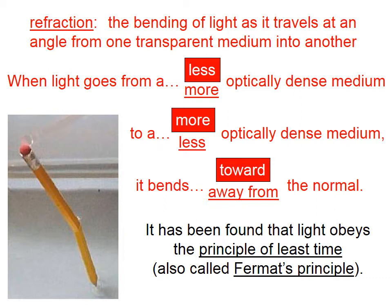This next statement is actually two statements in one, so I'll read them both. When light goes from a less optically dense medium to a more optically dense medium, it bends toward the normal. When light goes from a more optically dense medium to a less optically dense medium, it bends away from the normal.